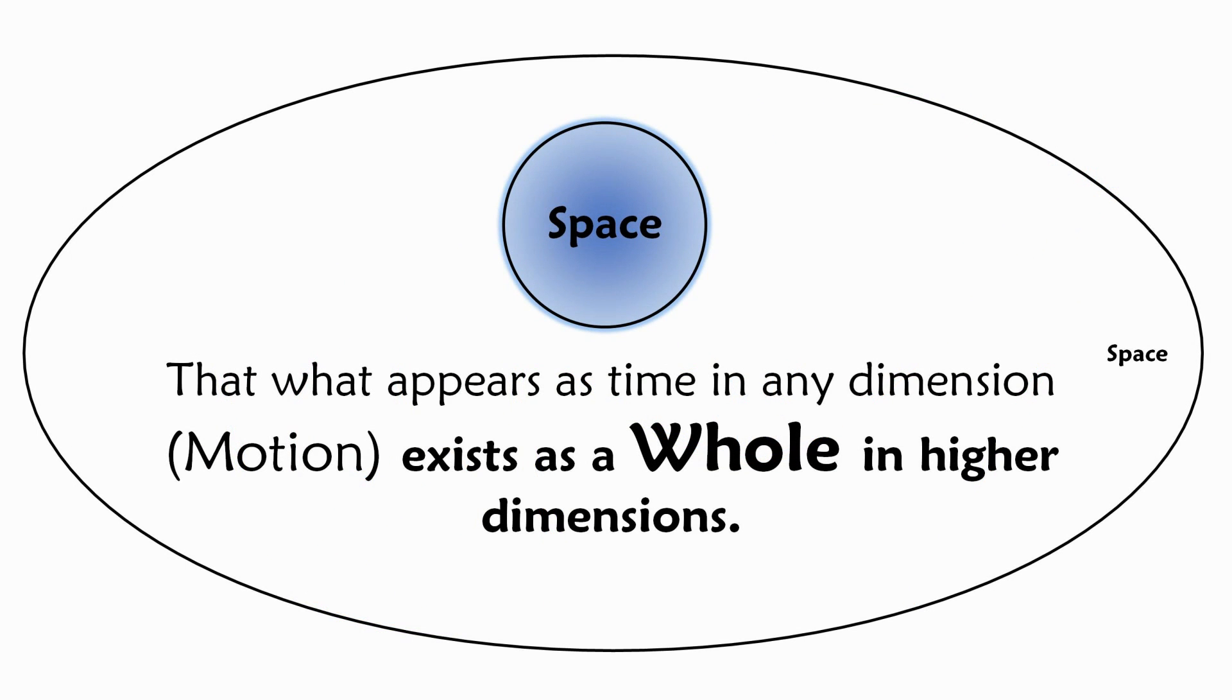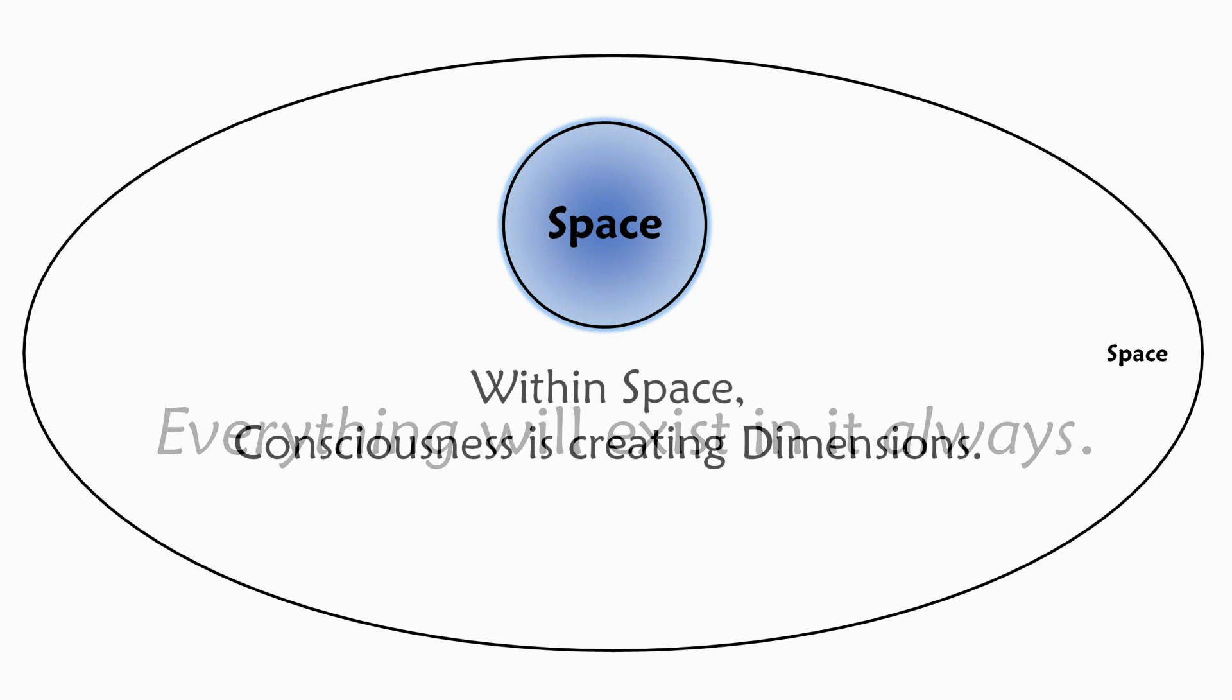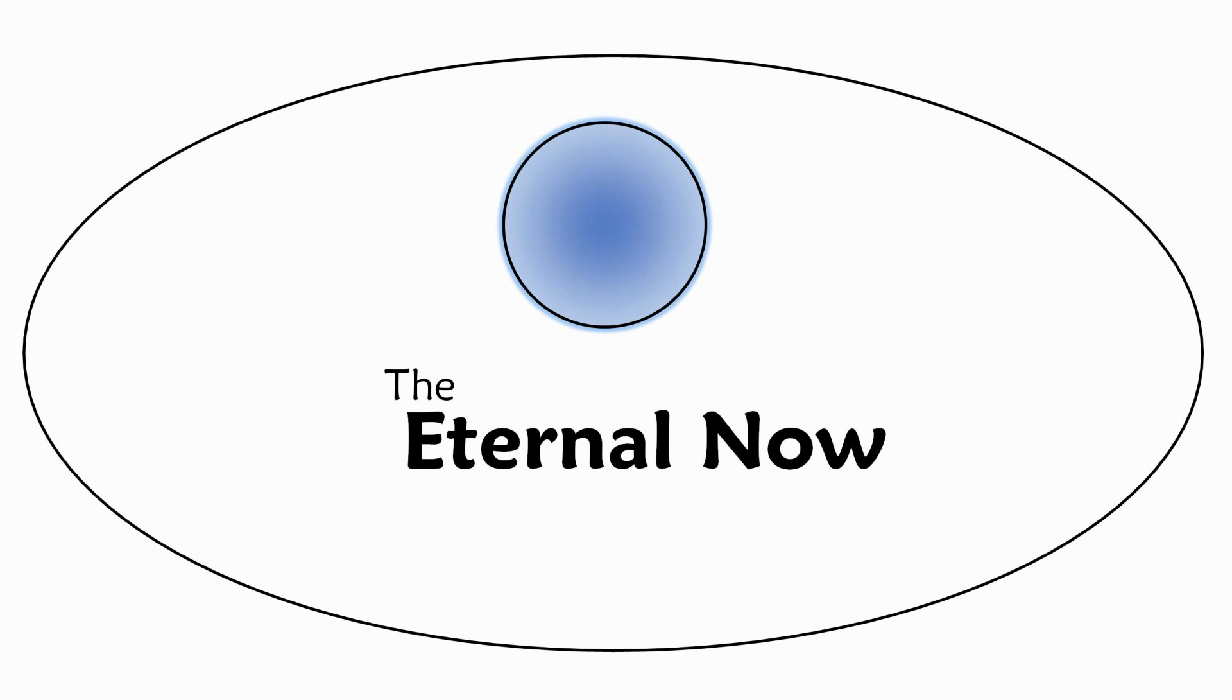We are slowly coming to an end here and summarize. In higher dimensions that what appears to be time in any dimension exists as a whole in higher dimensions. This means that in space everything will exist in it always. Now if everything will exist in space always that means that there is no motion in space. And if there is no motion in space how can there be motion in dimensions? And the answer to this is, as we said earlier, creation. The fact that motion manifests itself is due to creation. This manifestation, the act of change being observed, is created by consciousness. Within space consciousness is creating dimensions.